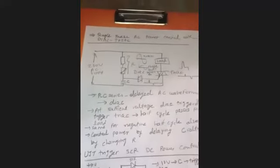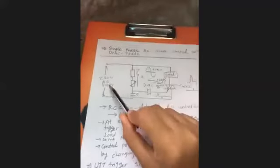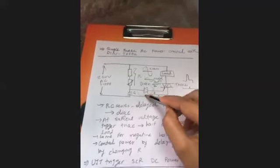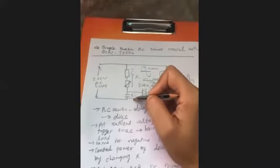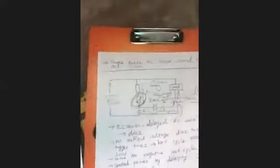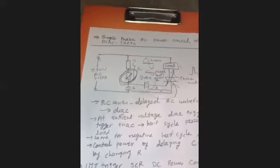We can also use a single-phase AC power control circuit with a diode and triac. With a 230V AC supply, R and C components charge through a diode and trigger the triac. By controlling the R and C values, we change the firing angle and control the output voltage and power.